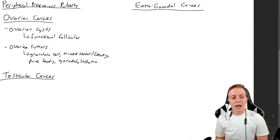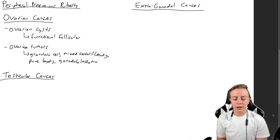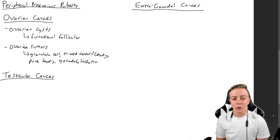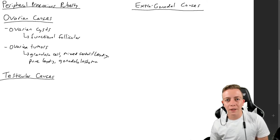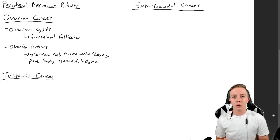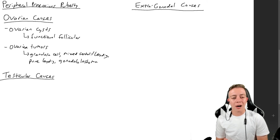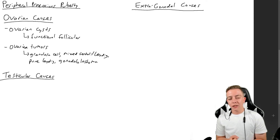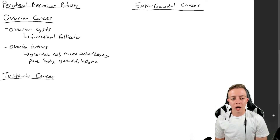Excess testosterone in someone with ovaries can cause a sex-incongruent puberty — a presentation somewhat like PCOS with masculinization — but it is still considered an early onset puberty. A pure Leydig cell tumor of the ovary, though unusual, is also possible. Finally, a gonadoblastoma is another tumor type that can be found in the ovary.